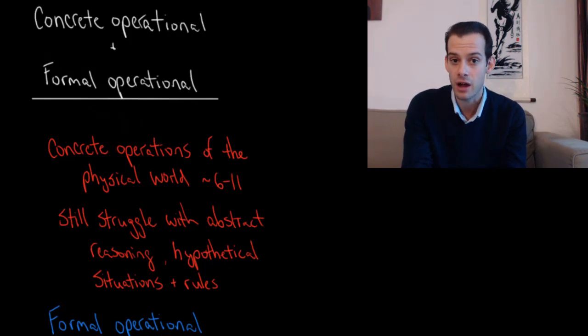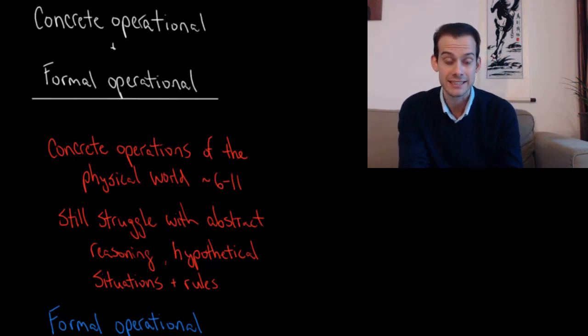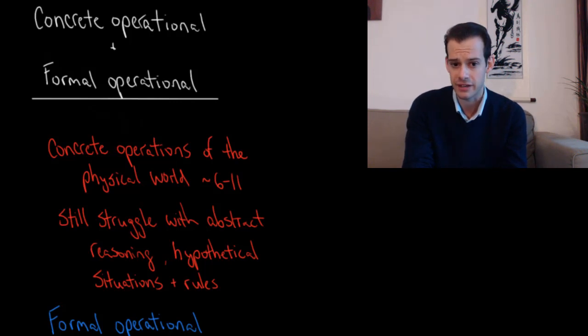As children move into the concrete operational stage they show an improved understanding of the concrete operations of the physical world. This stage lasts from about age 6 to about age 11, and during this stage children also show a reduction in their magical thinking for trying to explain how things happen or how the world works. But they still struggle with abstract reasoning.